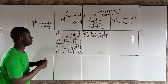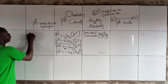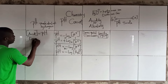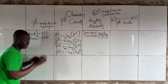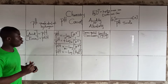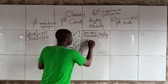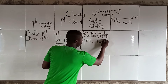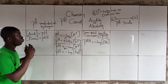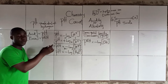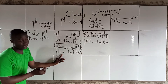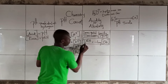For acids, we talk about pH. For bases, we talk about pOH. We should take note of the formula for pOH, which is: pOH equals negative log to the base 10 of [OH⁻]. We have other formulas on the pH concept, and these formulas are related.